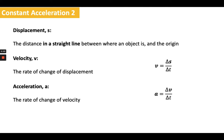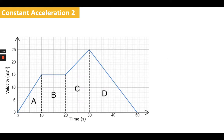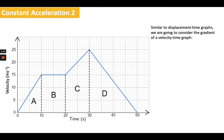Last time we were looking at a displacement time graph; we're now going to start thinking about a velocity time graph. We've got velocity on the y-axis as opposed to displacement. Similarly to last time, we're going to be looking at and using the gradient of this graph. The gradient is the change in the y-axis over the change in the x-axis. In this case, that's the change in velocity over the change in time, because velocity is on the y-axis and time is on the x-axis. So the gradient is the change in velocity over the change in time.